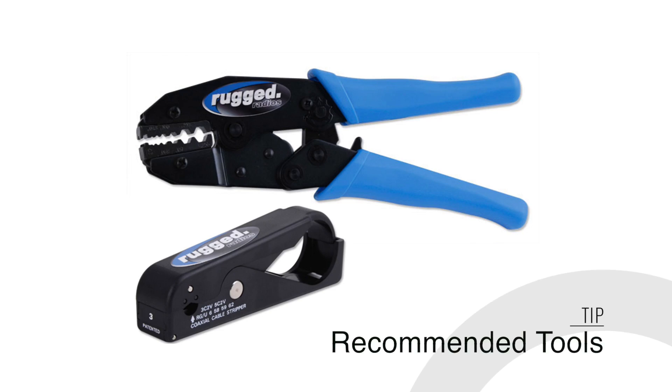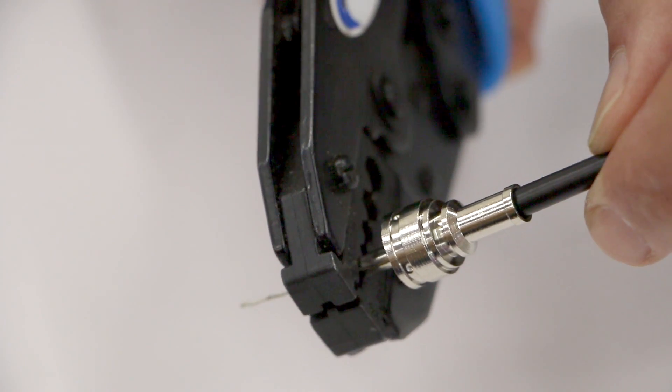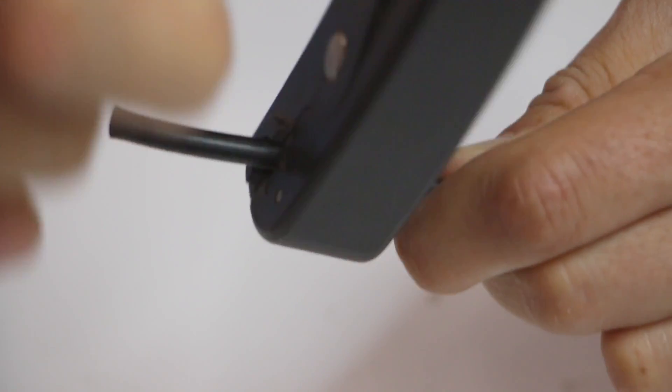Although you can perform the installation without these tools, your life will be a lot easier with them. Here we're using a crimper tool and a stripper tool, both available online at ruggedradios.com.